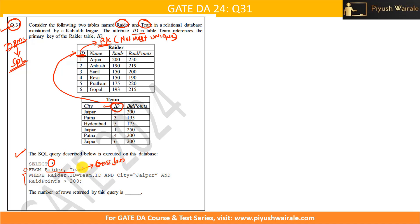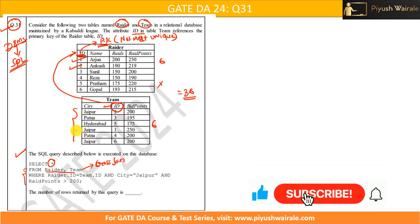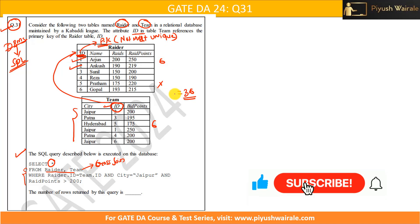Performing a cross join means we are computing the Cartesian product of the two tables. Here we have six rows in the Rider table and six rows in the Team table. So the Cartesian product gives us 6 × 6 = 36 rows. Each row in one table is combined with every row in the other table, resulting in 36 total rows.